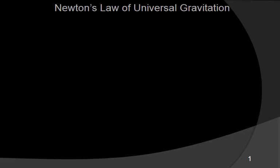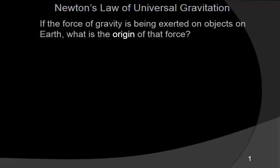Newton's law of universal gravitation is an important part of our discussion in understanding circular motion and how gravity works. The main question here is: if the force of gravity is being exerted on objects on Earth, what is the origin of that force? It's important to think through that.